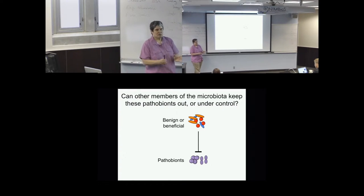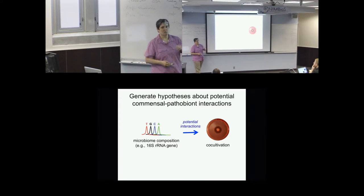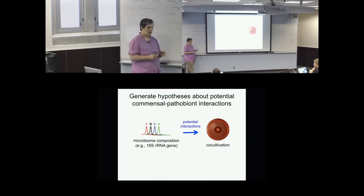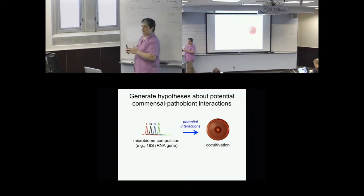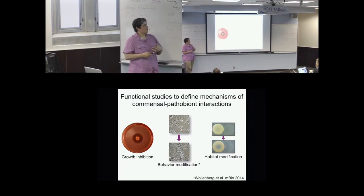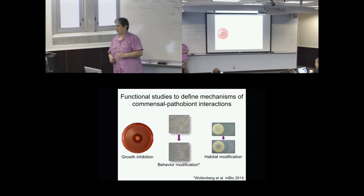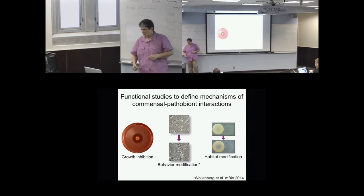There are a number of ways you can address this question. I'm going to show you how we've chosen to do it. We start with information about the composition of the microbiome. Some we generate, most comes from other groups. Based on just that compositional information, we generate hypotheses about potential pairwise interactions between commensals and these pathobionts. Then we take a very reductionist approach to testing these hypotheses. We develop conditions that allow us to do co-cultivation, looking for phenotypes such as this one, which is a classic example of antibiosis.